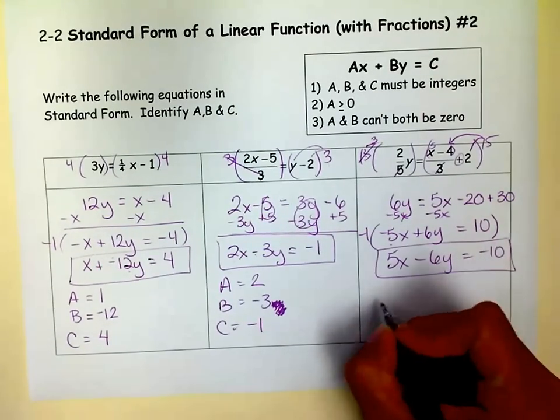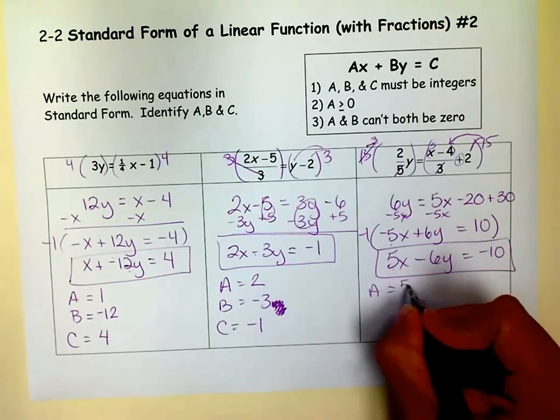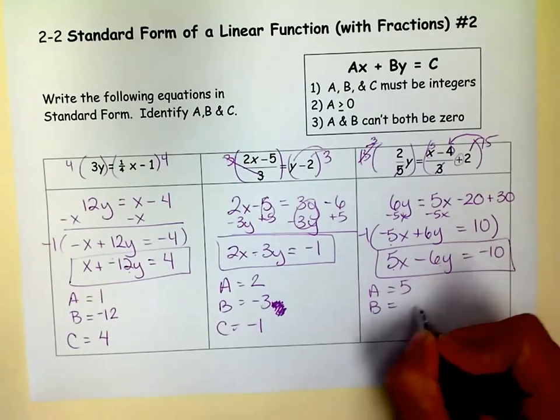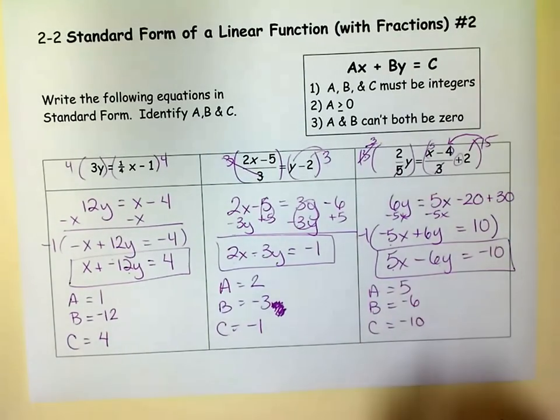So that's my standard form. And then A equals whatever is in front of the x. B equals whatever is in front of the y. And C equals what's on that other side. And that's how you write things in standard form. And find out what A, B, and C are. Good luck with that. M squared. Signing out.